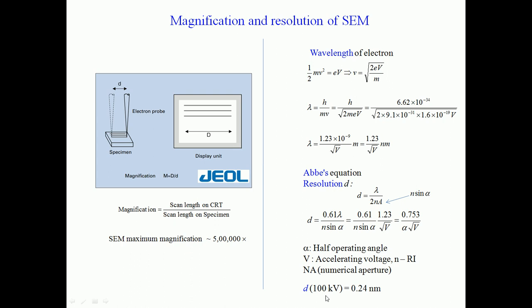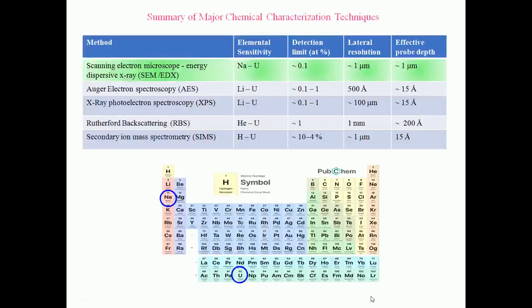A resolution of about 0.2 nanometers can be achieved with FESEM at very high voltage, though using very high voltage has its own disadvantages. In TEM, which uses 200–300 kV radiation, resolution is even higher. So in summary, in FESEM both magnification and resolution are high—magnification is high and minimum resolvable distance is low. Now let me begin the main topic: energy dispersive analysis by X-rays.